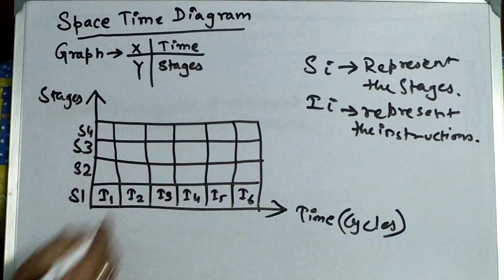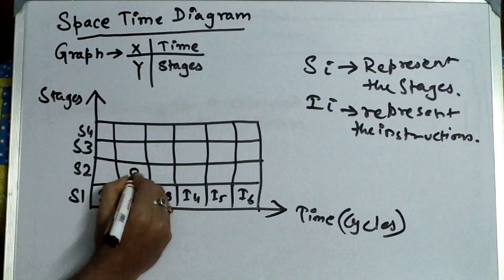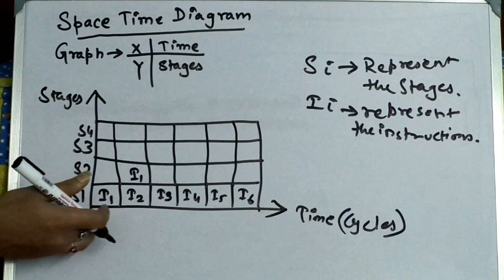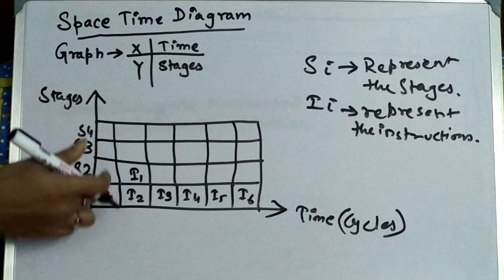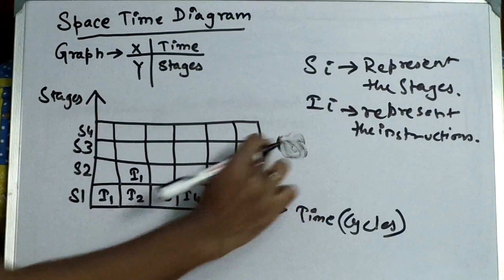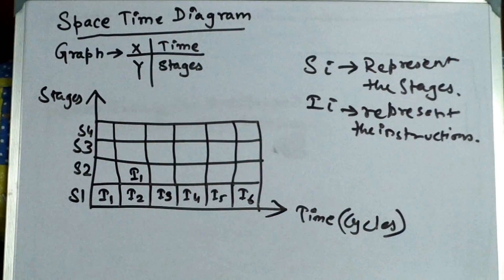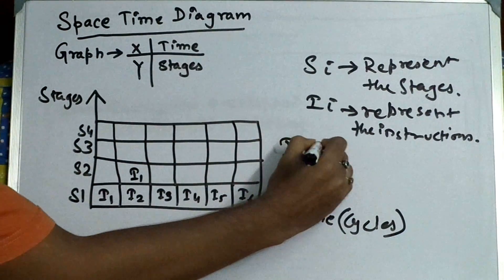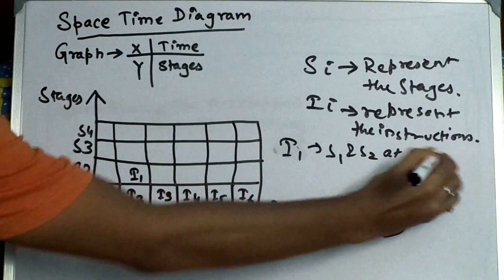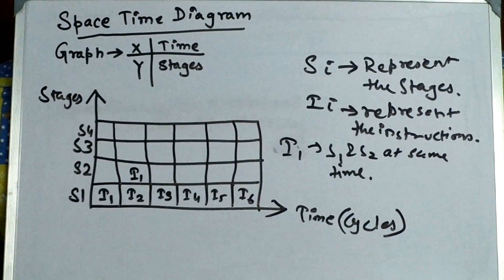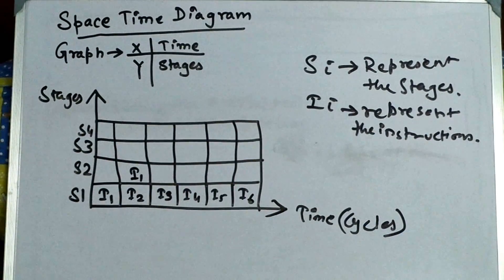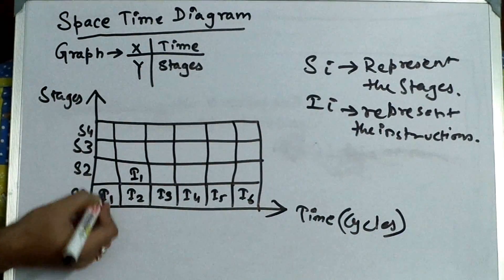We draw, then again I1. This is the final stage. So as we have seen in the pipeline structure, at the same block we cannot use two instructions at a time. Means we cannot use I1 in stage one and stage two at same time. This we have seen. If you have seen my previous lecture, I would like to recommend you to see the previous lecture of mine.